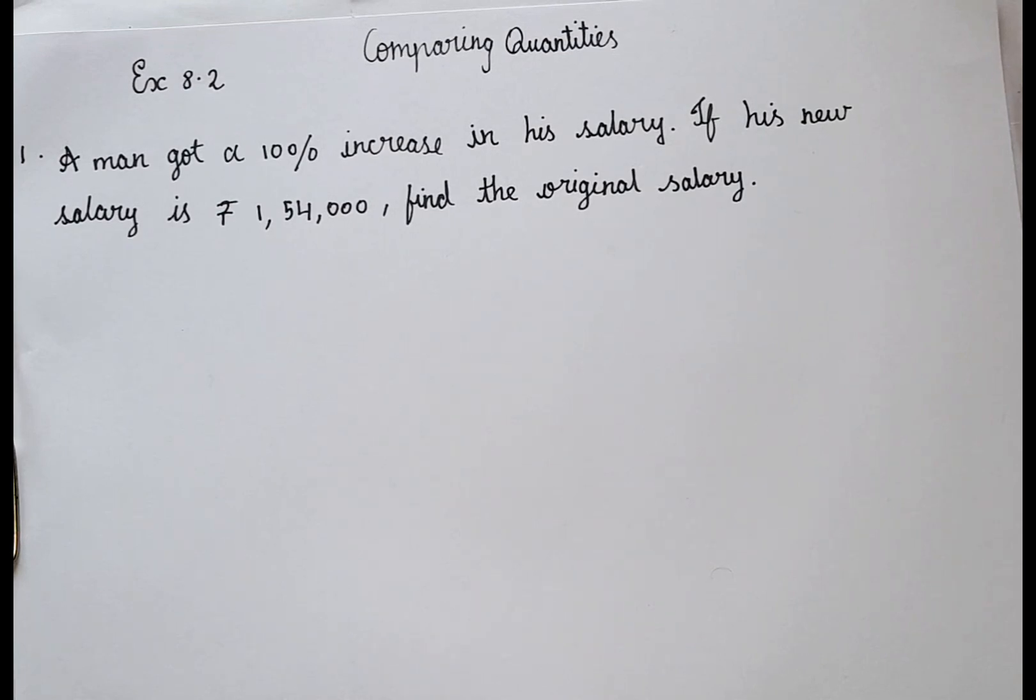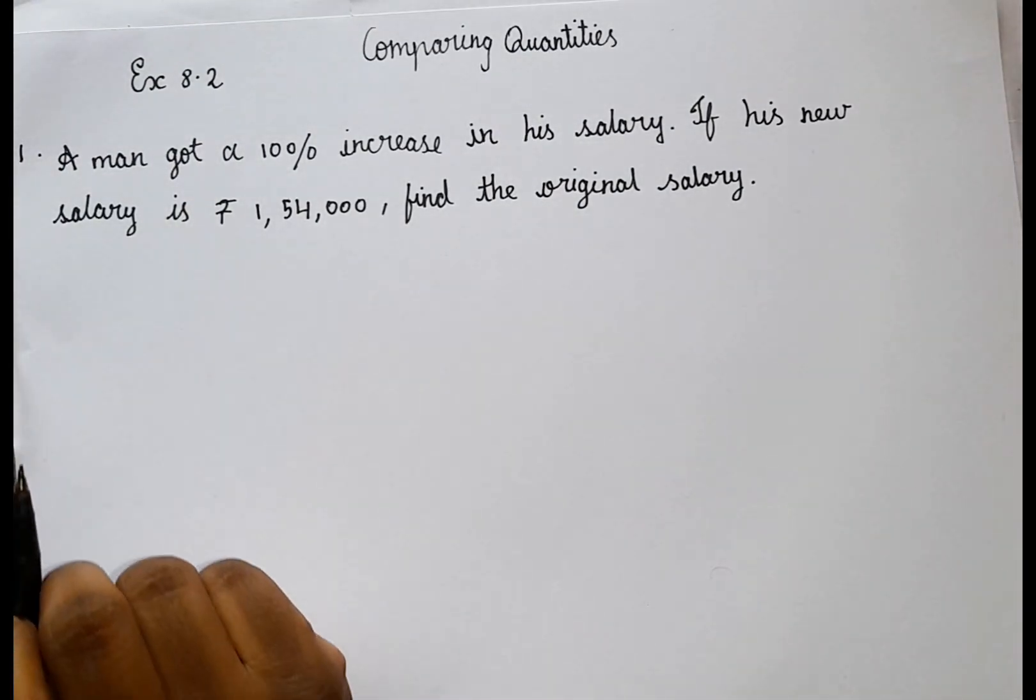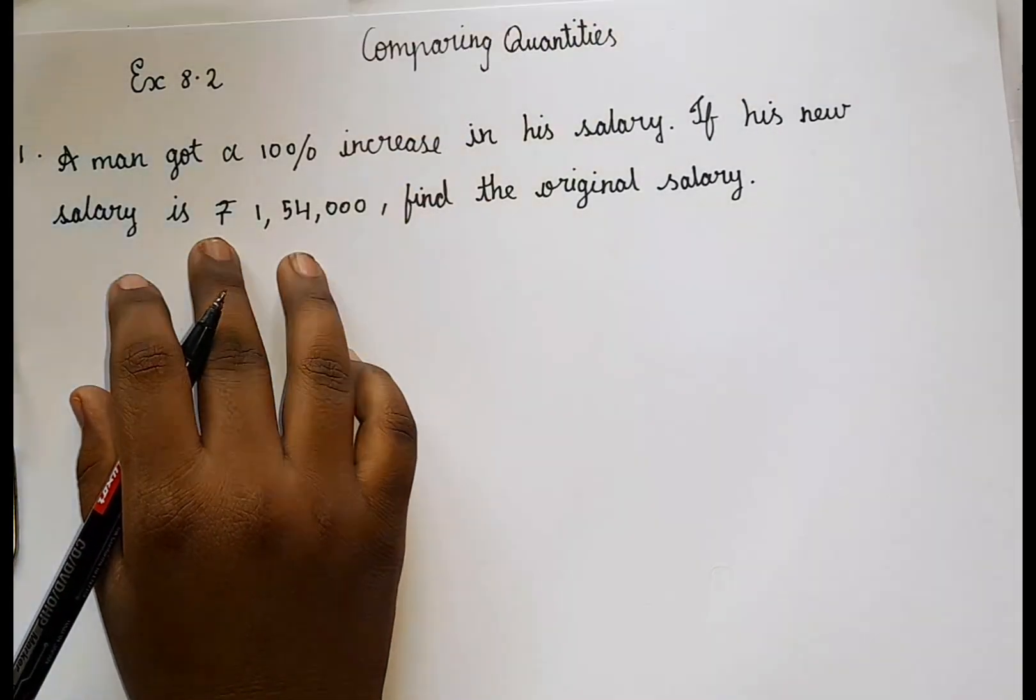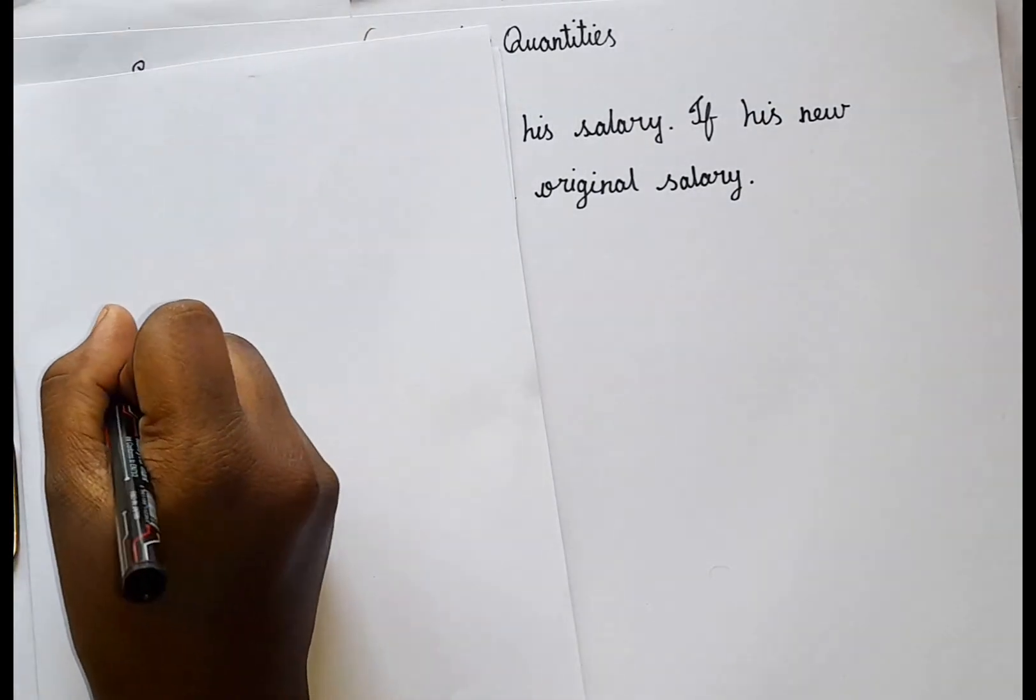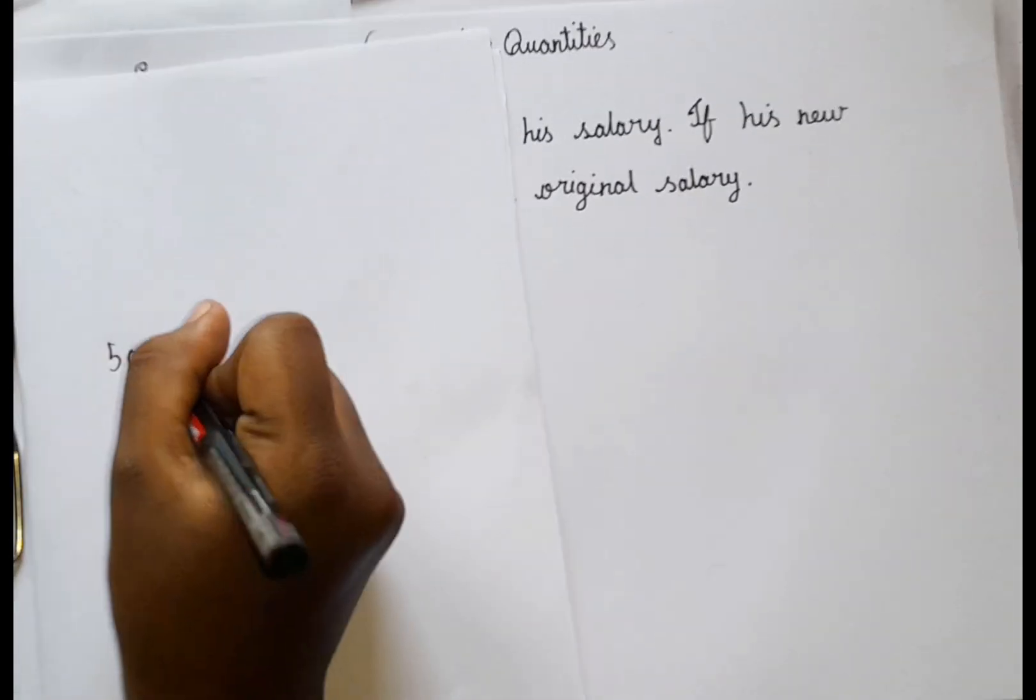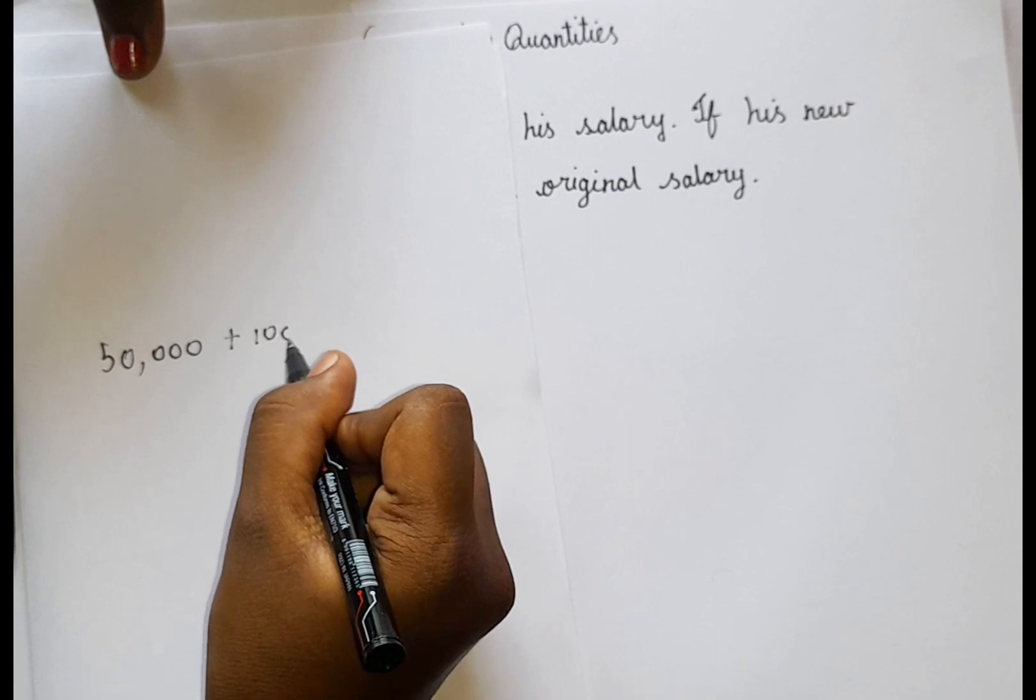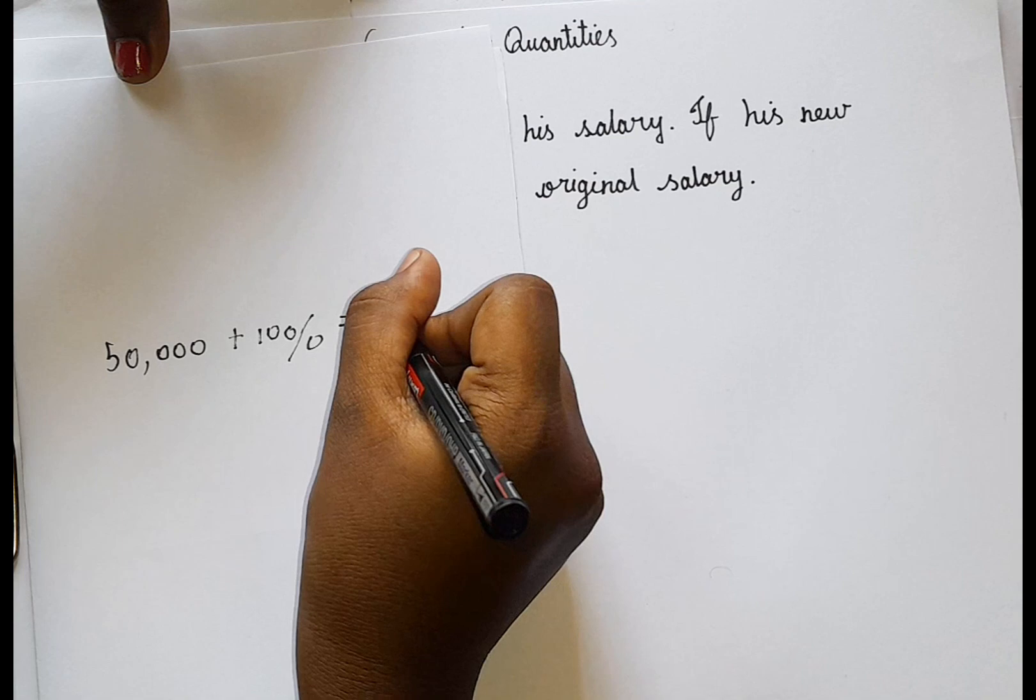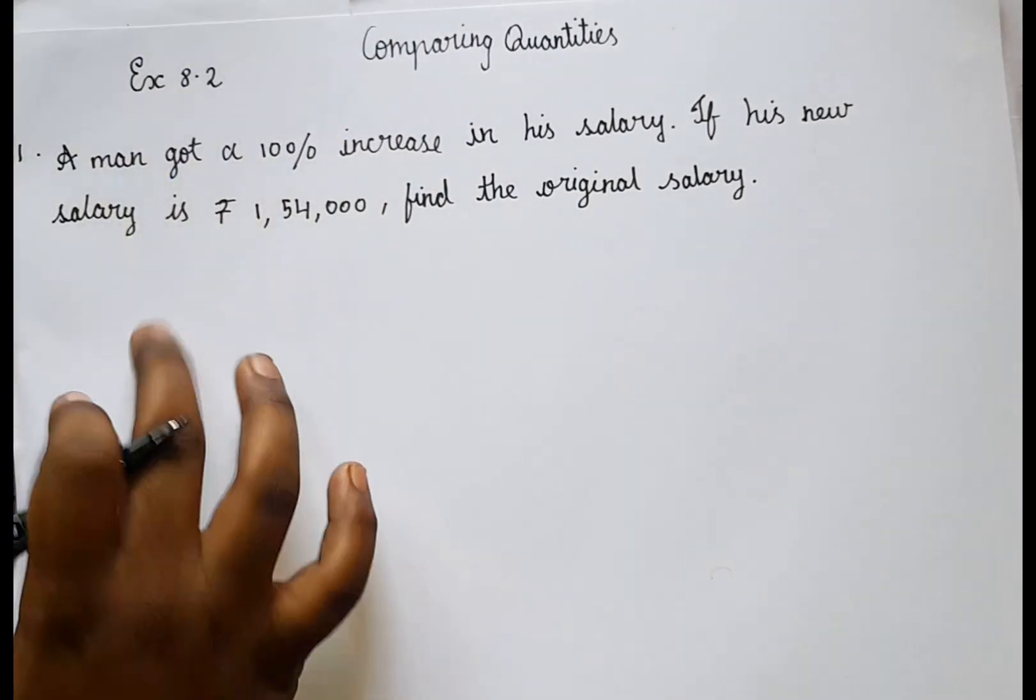So guys, first what I'm going to do is write the keywords here. They mentioned that a man got 10% increase in his salary. So 10% means, for example, take it as an example. If the man had 50,000 salary and he got 10% increase, so plus 10%. When we solve this, we will get one value. That is going to be our new salary. So the same thing is happening here.